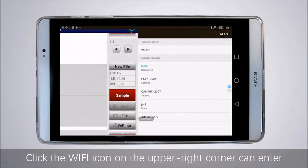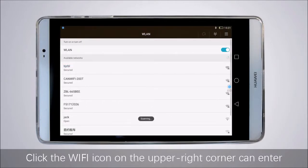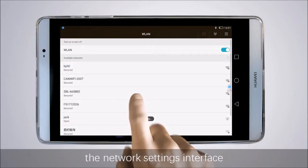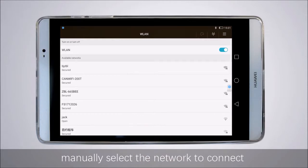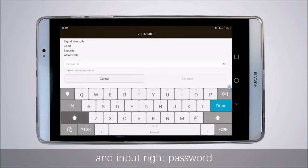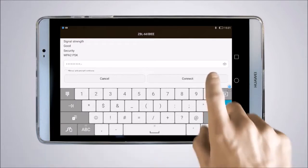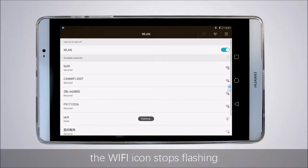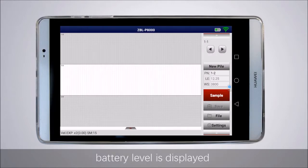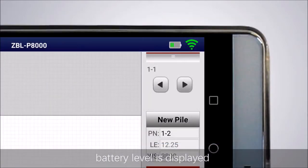Click the WiFi icon on the upper right corner and enter the network setting interface. Manually select the network to connect and input the right password. After a successful connection, the WiFi icon stops flashing and battery level is displayed.